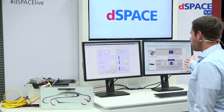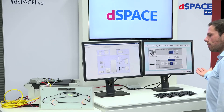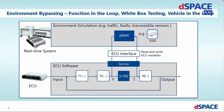Now let me demonstrate on the white screen how function-in-the-loop testing is done with the dSpace ECU interfaces. On the lower part of the screen we have the ECU with its ECU application, and on the upper part of the screen we have our plant model that is being executed on a dSpace real-time system. The real-time system and the ECU are connected through an ECU interface, which can be considered the star of this demo. The ECU application has been equipped with a service that handles the real-time communication between the real-time system and the ECU through the ECU interface.